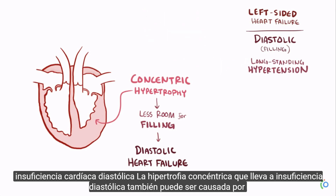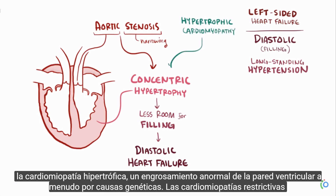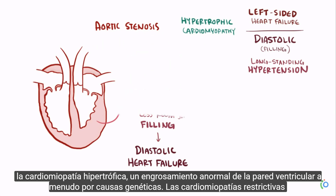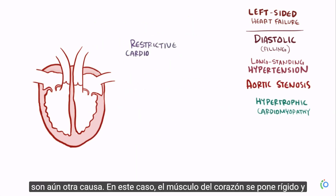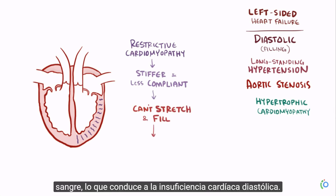Concentric hypertrophy leading to diastolic failure can also be caused by aortic stenosis, a narrowing of the aortic valve opening, as well as hypertrophic cardiomyopathy, an abnormal ventricular wall thickening often from a genetic cause. Restrictive cardiomyopathies are yet another cause — in this case, the heart muscle gets stiffer and less compliant, so the left ventricle can't easily stretch out and fill with as much blood, leading to diastolic heart failure.